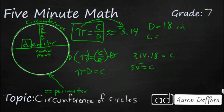The only other term we need to know is the radius. It is halfway — from the outside to the central point. The diameter equals double the radius. So sometimes if you get just the radius, you double it and then plug it in.